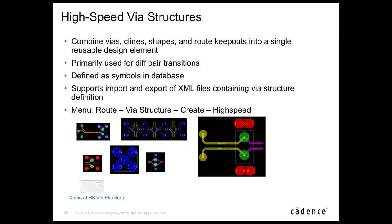The high-speed via structure feature allows combining vias, C-lines, shapes, and route keep-outs into a single reusable design element, accessible from the database or from disk in XML format. This is an Allegro PCB Editor High Speed product option, accessed from Route > Via Structure > Create High Speed. In 16.6, via structures existed but could not be written to disk for reuse in other databases — now they can.